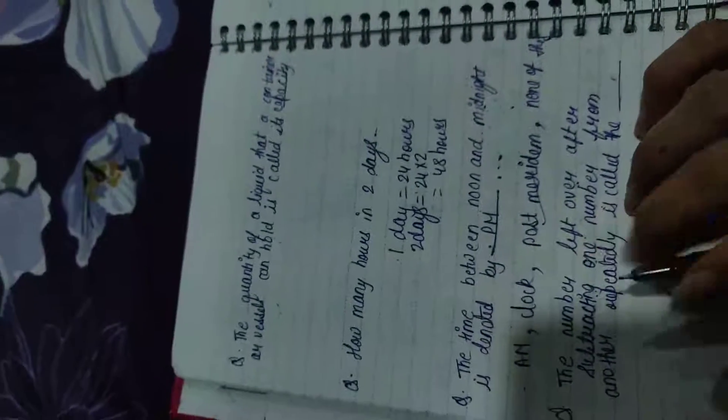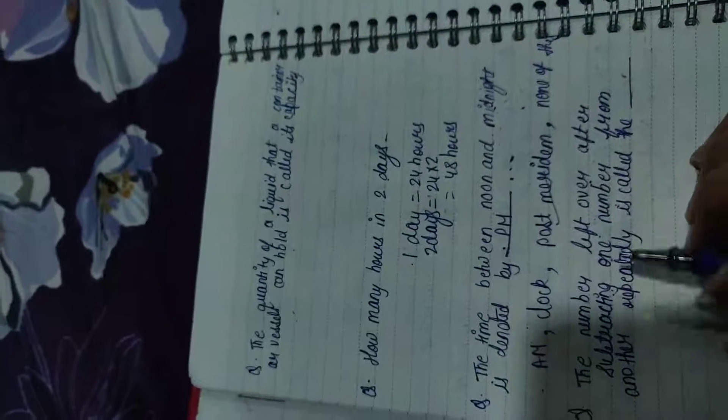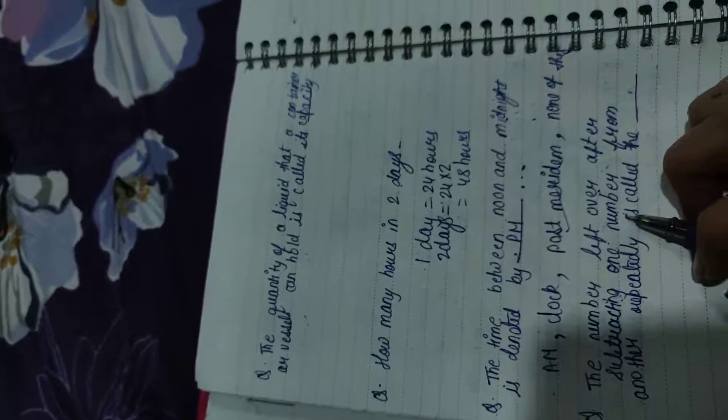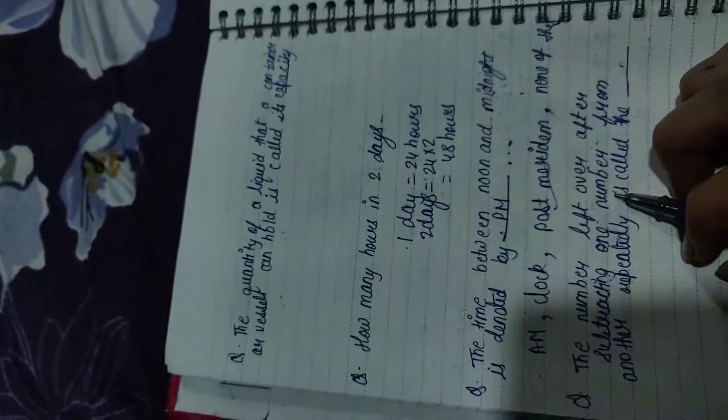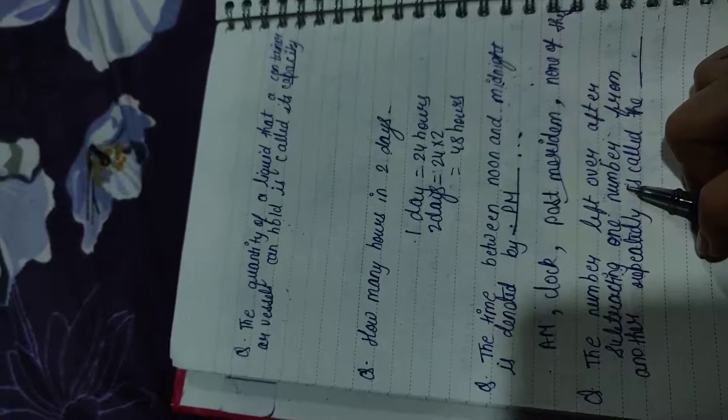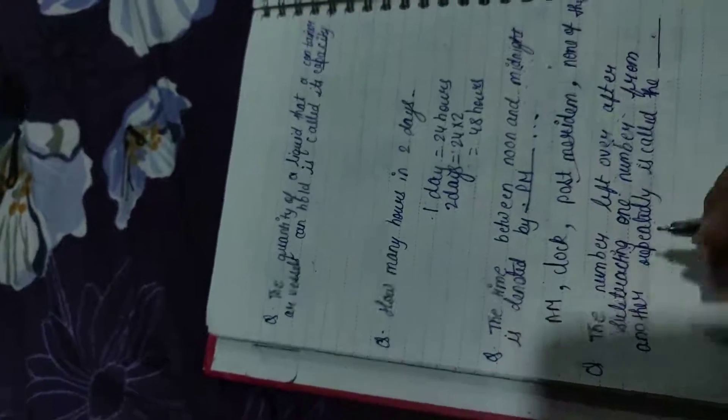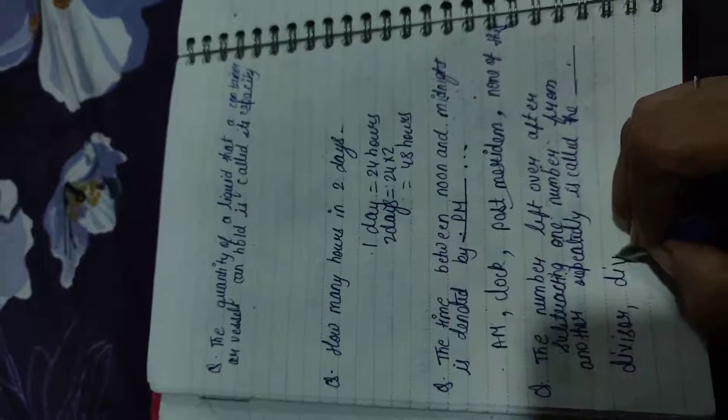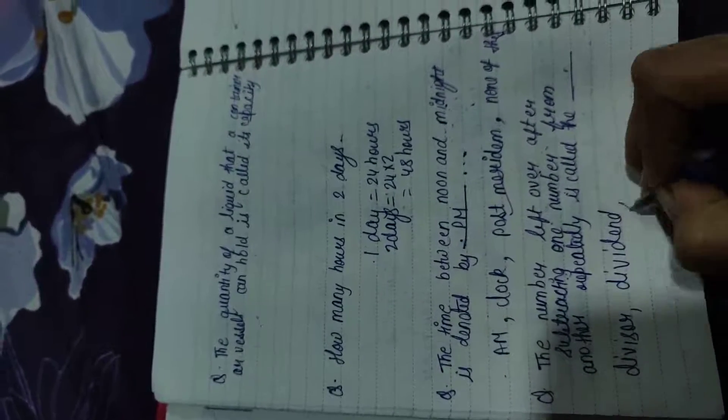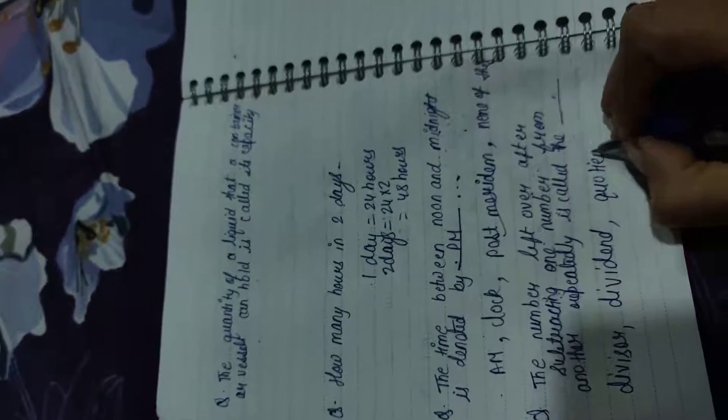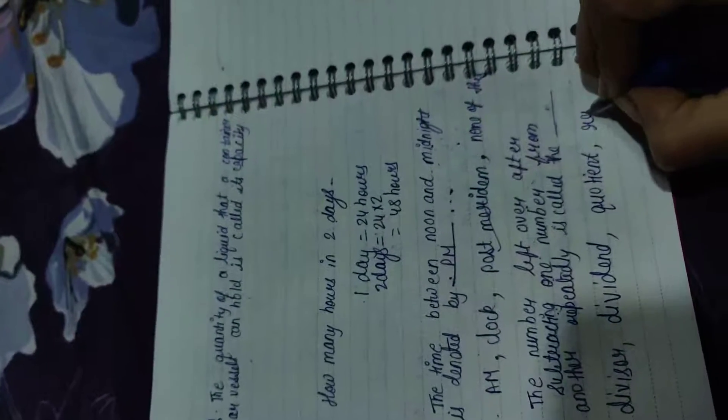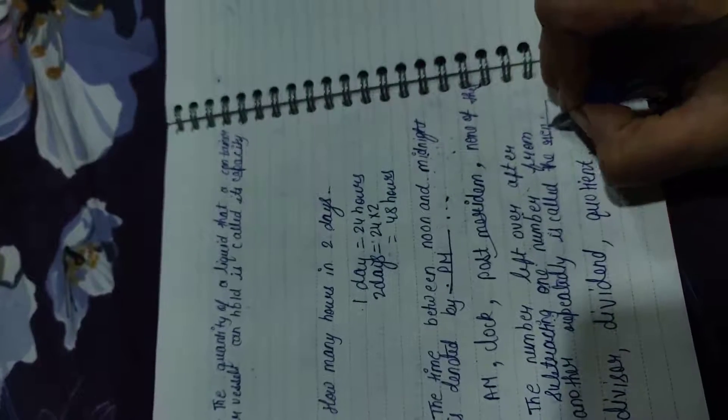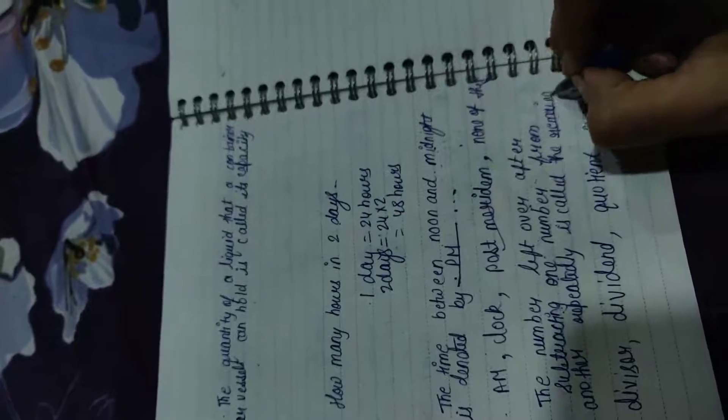Last question: The number leftover after subtracting one number from another repeatedly is called the? Jab bhi hum kisi number ko dusre number se subtract karke hamara jo leftover matlab bach jata hai, to usko hum kya karte hain? Option hai aapke paas: divisor, dividend, quotient, remainder. Kya bolte hain usko? Jo bhi bach jata hai, usko hum remainder bolte hain. The answer is remainder.